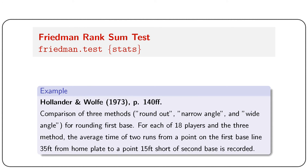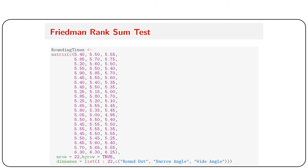The first example compares three methods — round out, narrow angle, and wide angle — for rounding first base, using 18 players. The average time of two runs from a point 35 feet from home plate to a point 15 feet short of second base is recorded. The data is entered in R as a matrix with three columns: round out, narrow angle, and wide angle, with 22 rows total.